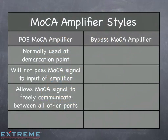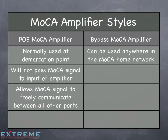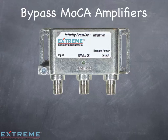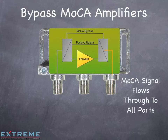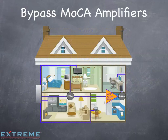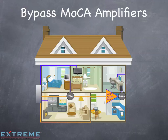The second style of MOCA amplifier, the bypass MOCA amplifier, can be used anywhere in the MOCA home network and will pass the MOCA signal to the input of the amplifier, as well as allowing the MOCA signal to freely communicate between all ports. The bypass MOCA amplifier allows the MOCA signal to flow through the amplifier and is ideal in situations such as loop cable configurations or long outlet locations such as in MDUs, schools, and commercial buildings.